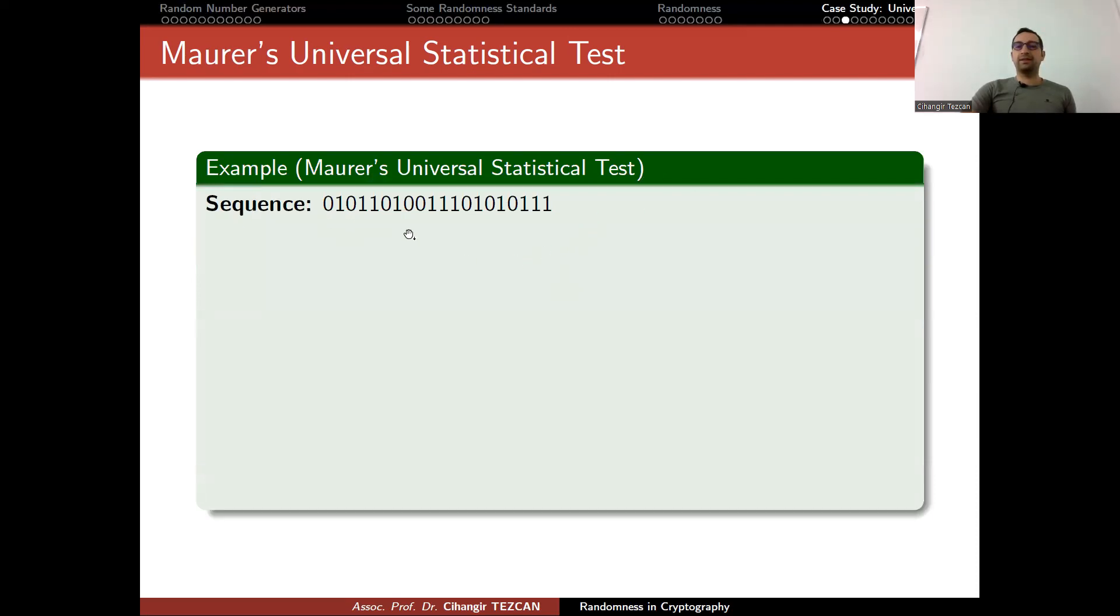Let's say that this is the sequence you have. Let's say that our block number is 2. Normally Maurer's universal statistical test doesn't allow you to choose L equals 2, but as an example, I'm giving it to you. You divide this into a sequence of blocks of 2 bits. Then you divide it into the initialization part and where you are going to perform the test. Since our block size is 2, I'm translating these bits into integers, so your values will be from 0 to 3.